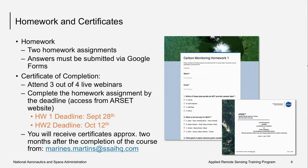We will have two homework assignments, which will be submitted through Google Forms. The first homework links are available on the RSET website, and I've also posted them in the question tab here along the side of your panel. The Spanish version for the homework will be available within the next couple of days, so check back on the RSET website then. The second homework link will be available during week four. The homework deadline for the first homework is September 28th, so you have two weeks to complete and submit that assignment. To receive a certificate of completion, you need to attend three out of four live webinars and complete both homework assignments. You can expect to receive a certificate of completion about two months after the completion of the course.